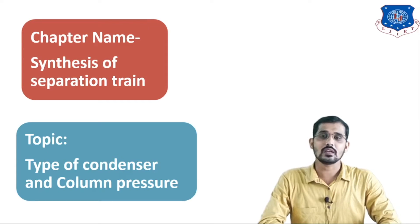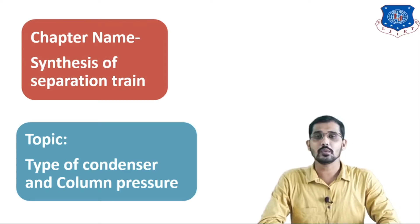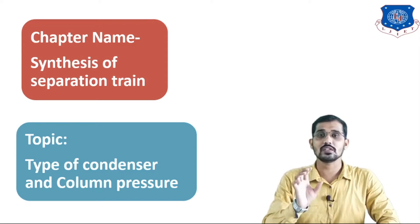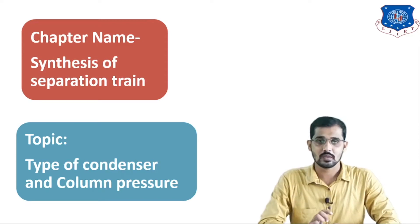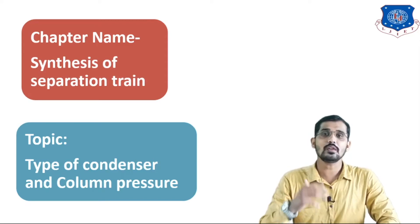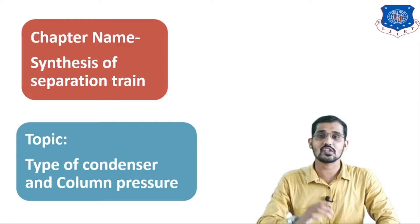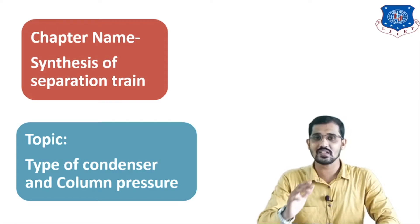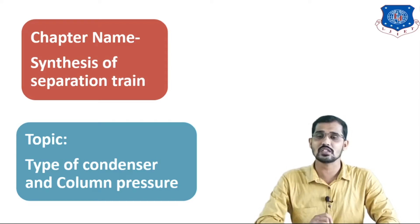We know that condensers are used in a distillation column. A distillation column is used to separate a liquid mixture, in which we have two sections — above the feed plate is known as the rectifying section, and below the feed plate section is the stripping section.